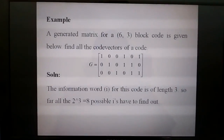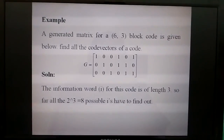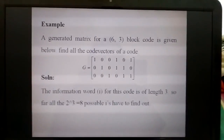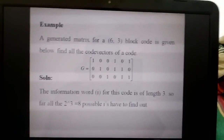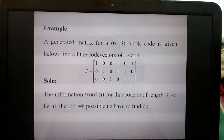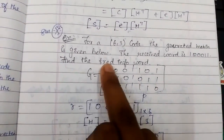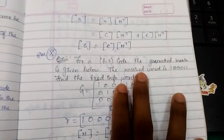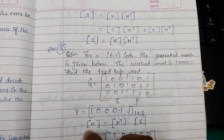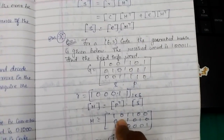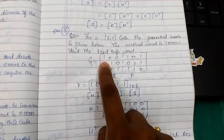Here is the example: the generator matrix G for a (6, 3) block code is given. We are asked to find all code vectors and, given a received word r, find the transmitted information word. The given data is the generator matrix G and the received word r. We already know we need G, H (the parity check matrix), the error pattern, and the syndrome to solve the problem.